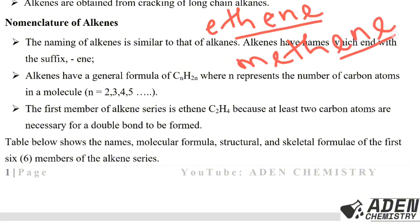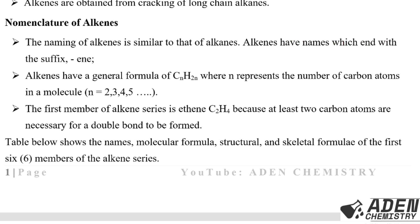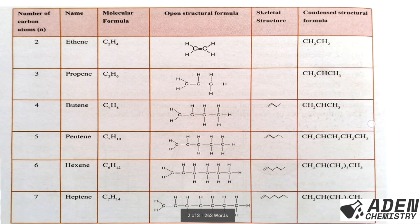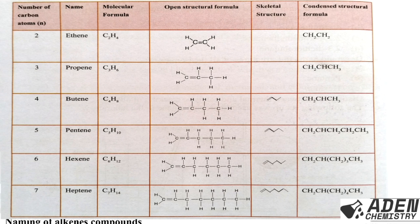You cannot form a double bond with only one carbon atom, so at least two carbon atoms are necessary. The table below shows the names, molecular formula, structural formula, and skeletal formula of the first six members of the alkene series. In this table we have the number of carbon atoms, the name of the alkene, the molecular formula, the open structural formula, the condensed structural formula, and the skeletal structure.